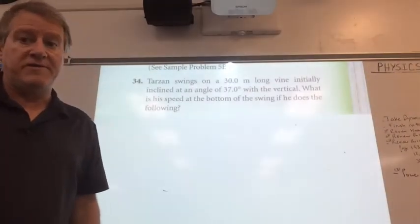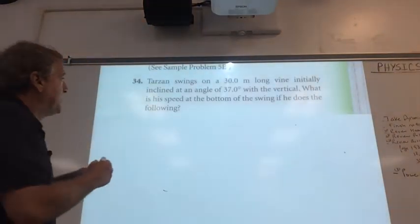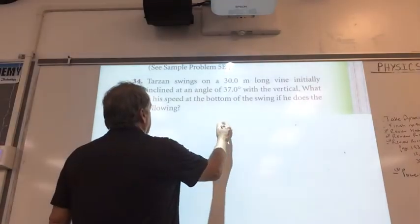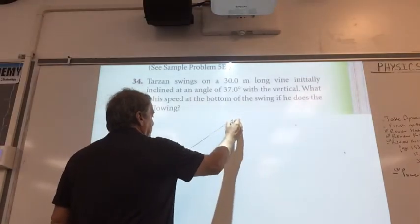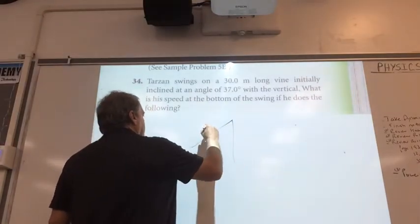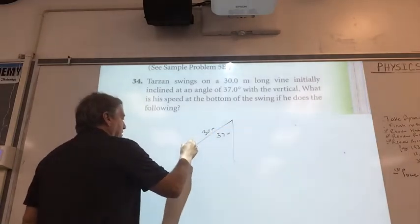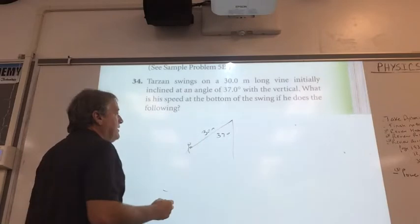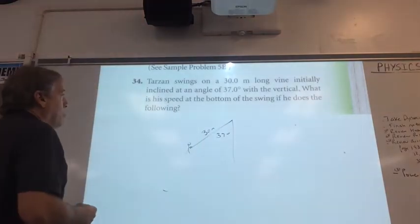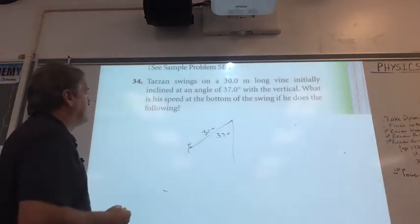Alright, we're starting with question number 34. Tarzan swings on a 30 meter long vine initially inclined at an angle of 37 degrees from the horizontal. So this is 30 meters long at 37 degrees. Let's draw our Tarzan here holding on.